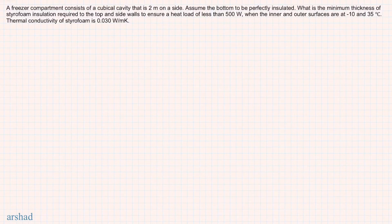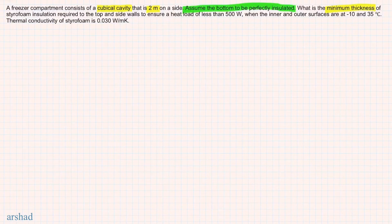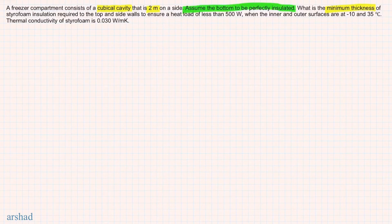Let's mark some important information. The freezer compartment is a cubical cavity with each side being 2 meters. The bottom is perfectly insulated. The question asks for the minimum thickness such that the total heat load does not exceed 500 watts, with inner and outer surface temperatures of minus 10 and 35 degrees Celsius. We are also given the thermal conductivity of styrofoam to solve the problem.